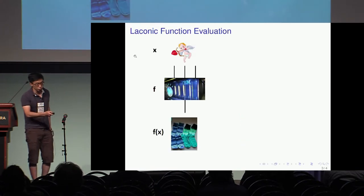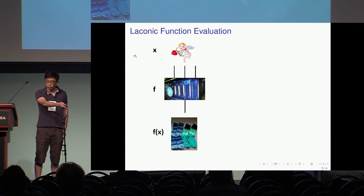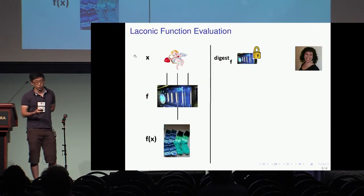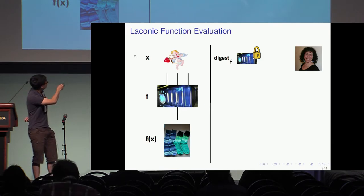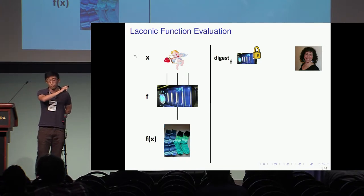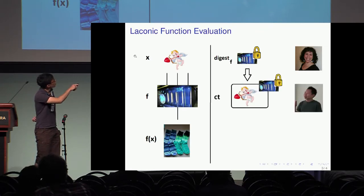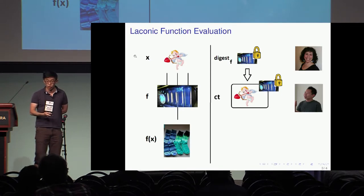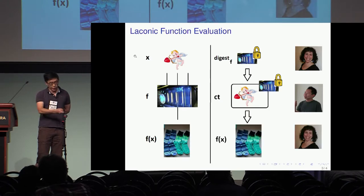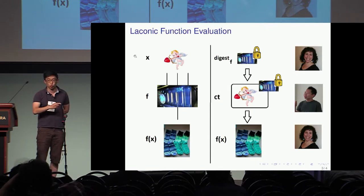We introduce a new primitive that we call laconic function evaluation, where we have some private data x, and we want to let Tal compute f of x on our data. Using laconic function evaluation, Tal can compress the huge algorithm into some short digest that can be seen as a public key for the function. A regular crypto attendee will be able to use this public key to generate a ciphertext of their dating history. After that, Tal can recover the ciphertext and, using her knowledge of the circuit, will be able to recover the best result so she can place the order.